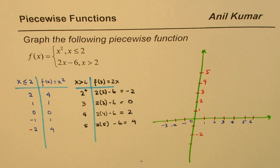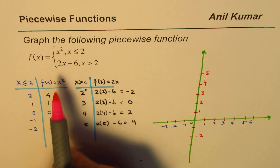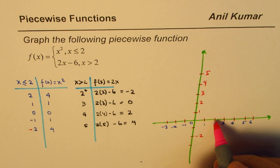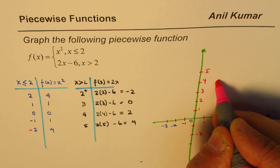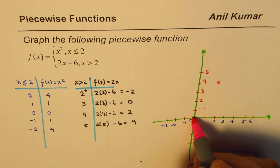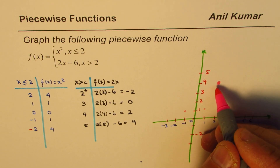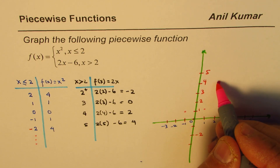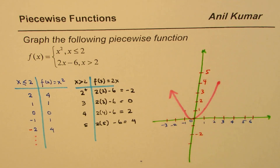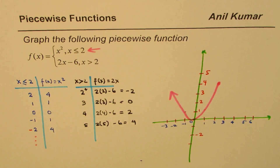Now let's plot these values on the graph. The first piece is f(x) equals x squared, which forms a parabola. At x equals 2, which is included, 2 squared is 4, so we get a filled-in point at (2, 4). At x equals 1, f equals 1; at 0, f equals 0; and the parabola is symmetric. So the parabola is sketched from the left up to and including x equals 2.